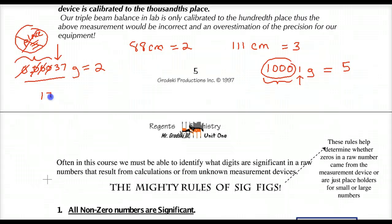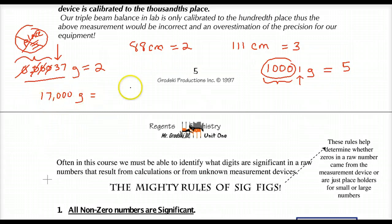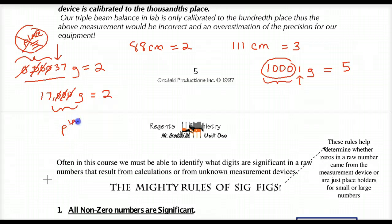Similarly, if I have something like 17,000 — something that measures something very heavy isn't very good at measuring something very light. So 17,000 also has two significant figures because the zeros at the end are not significant — they are placeholders that help get out to that big value. Placeholders are never going to be significant.